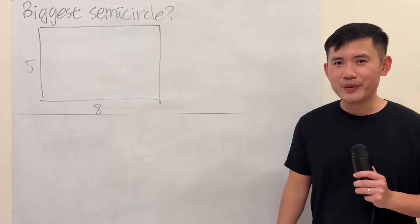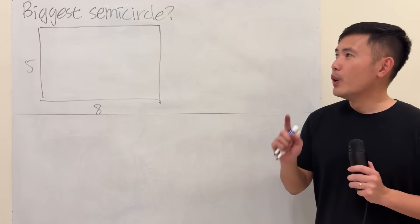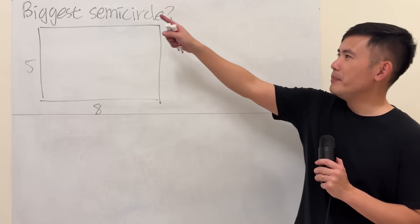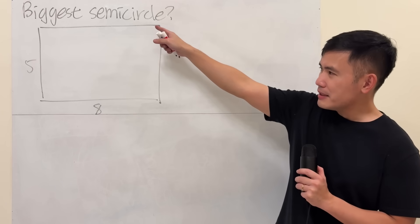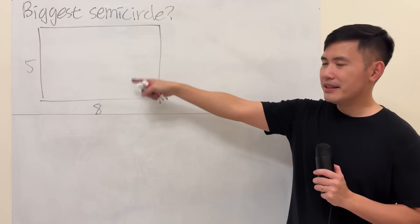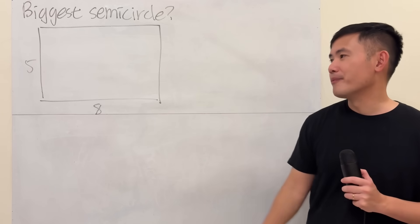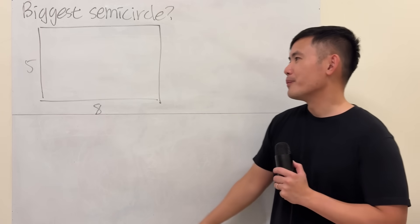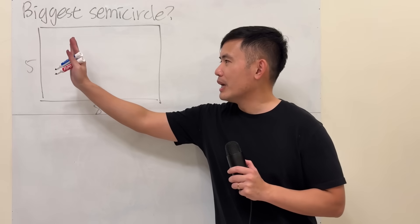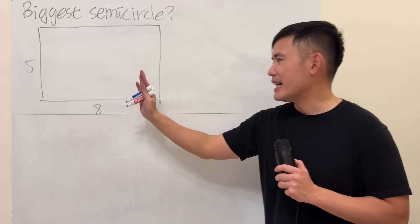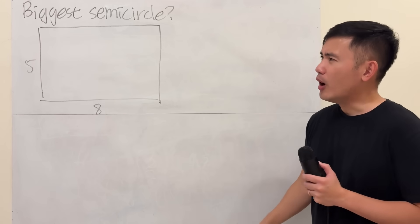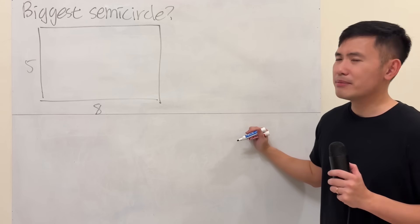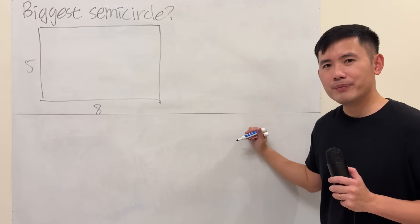I have a very interesting question for you guys. We are going to find the biggest semicircle in this rectangle. We have a 5 by 8 rectangle. How are we going to draw the semicircle though?